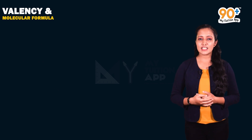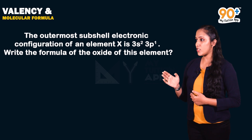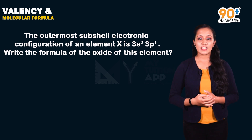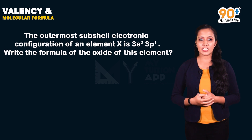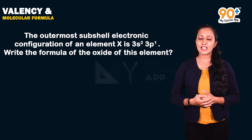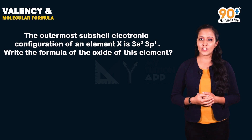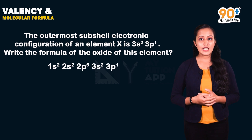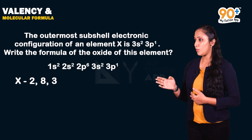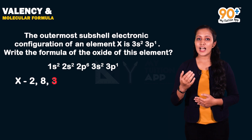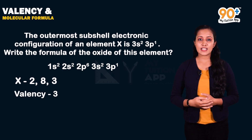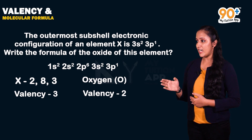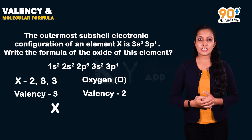Previous year question: The outermost subshell electronic configuration of element X is 3s², 3p¹. Write the formula of the oxide of this element. The complete configuration is 1s², 2s², 2p⁶, 3s², 3p¹, giving electronic configuration 2, 8, 3. Losing 3 electrons gives stability, so the valency of X is 3. Oxygen has valency 2. Exchanging valencies gives the molecular formula X₂O₃.